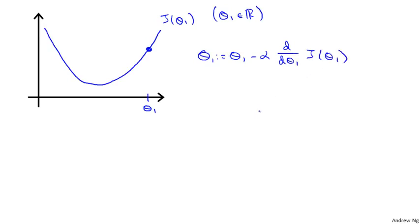As an aside, you may wonder why I changed the notation from partial derivative symbols to d/dθ. In mathematics, we call this a partial derivative or a derivative depending on the number of parameters in the function j — but that's a mathematical technicality. For the purpose of this lecture, think of the partial symbols and d/dθ₁ as exactly the same thing.